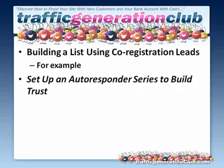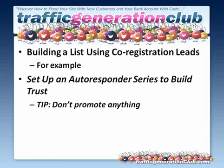The next thing to do is set up an autoresponder series so that you can build trust with your readers. This type of lead does not know who you are — they didn't come directly to your site and sign up for your newsletter. So your first job is to build trust with the leads by setting up a 7 to 12 message autoresponder series that's highly targeted to the type of information the leads are seeking. Here's a quick tip: do not promote anything in the first few messages in the series.